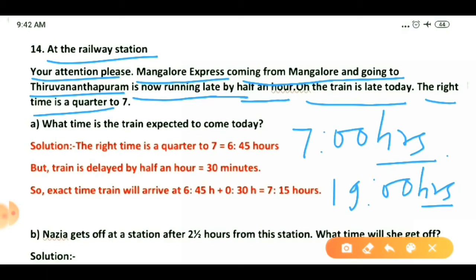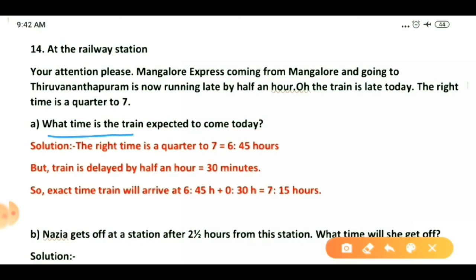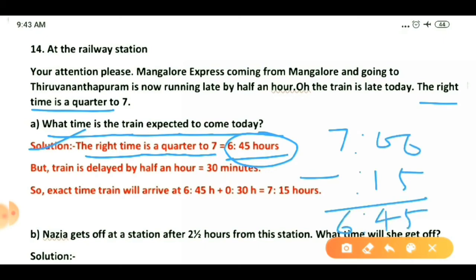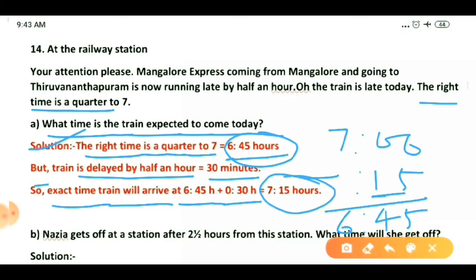Trains use a 24-hour clock — not AM/PM. The first question: what time is the train expected to come today? Quarter to seven means 6 hours 45 minutes — quarter always means 15 minutes less. The train is delayed by half an hour, which is 30 minutes. So the expected arrival time is 6:45 plus 30 minutes, giving 7 hours 15 minutes.